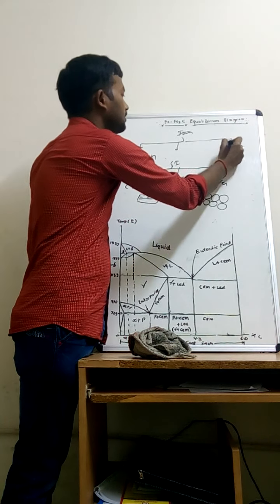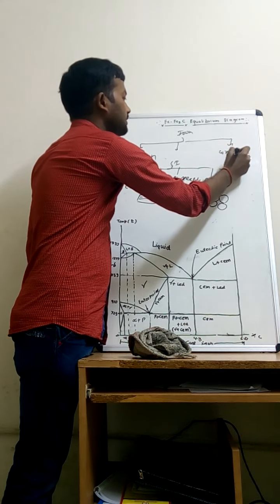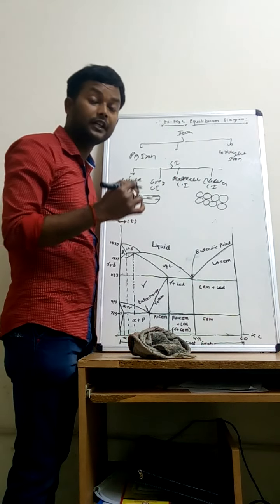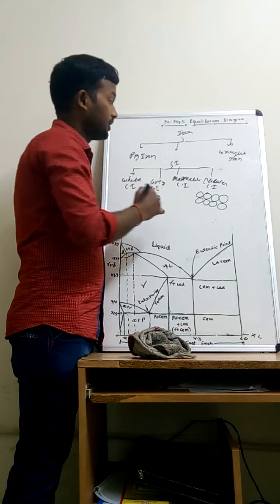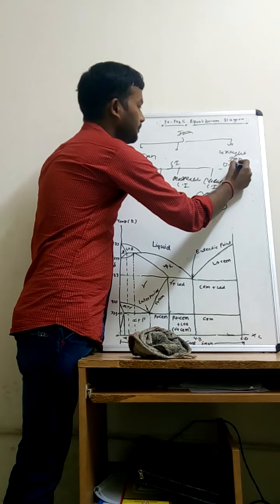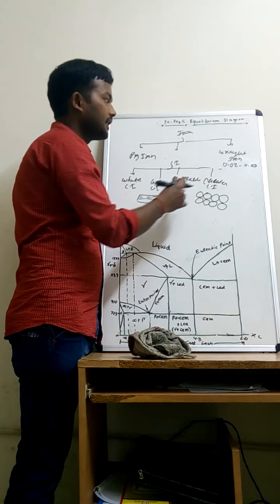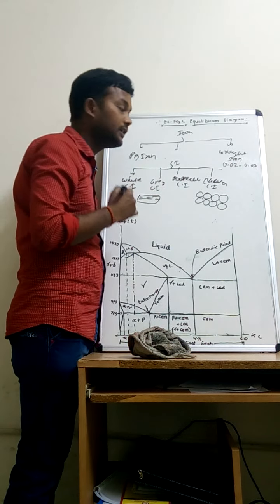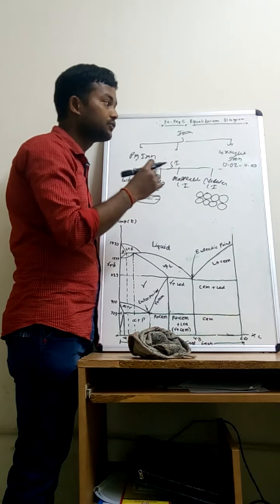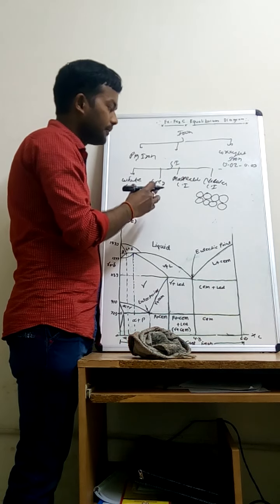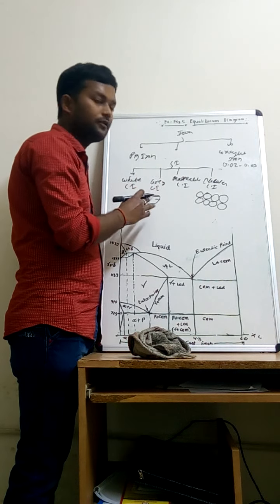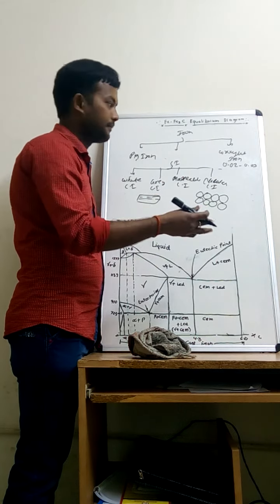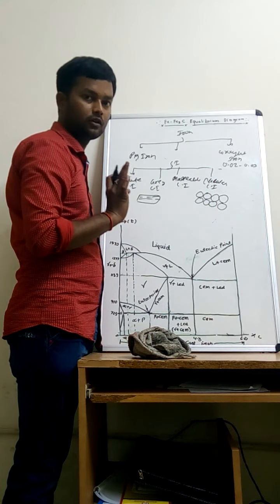Third is wrought iron, which is a very important type of iron. In wrought iron, the percentage of carbon is even less than steel — between 0.03% and 0.2%. The carbon is in the form of fibers, which is why it is very useful in forming operations, as it can be easily reproduced into any shape.